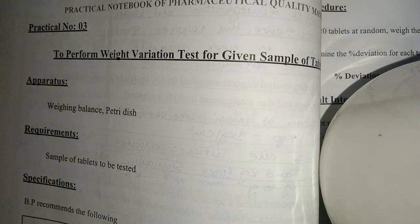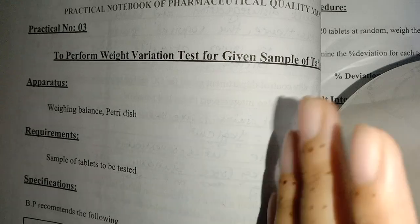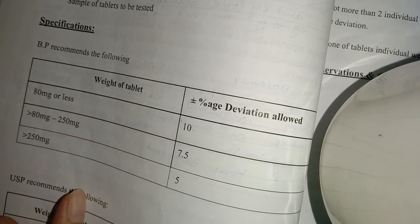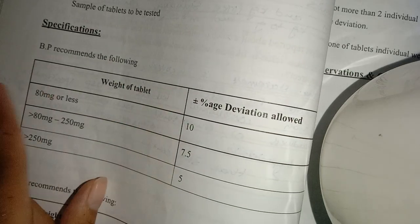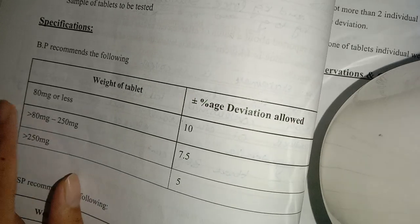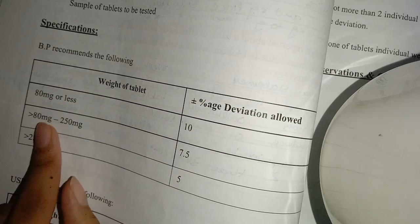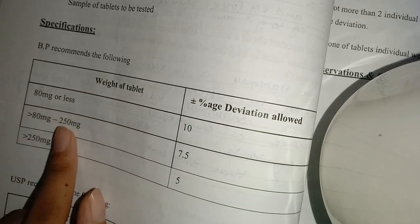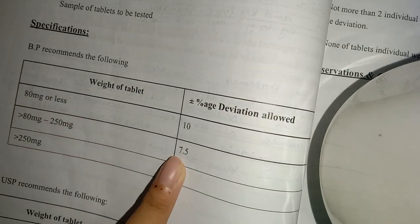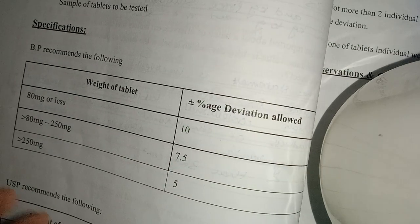Now its specifications are different. BP British Pharmacopoeia says that if the weight is less than 80mg, then there is 10% deviation allowed. If it is more than 80mg but less than 250mg, then we have 7.5% deviation allowed. Plus minus means that it can be plus or minus from the average.